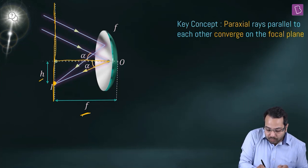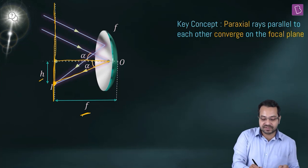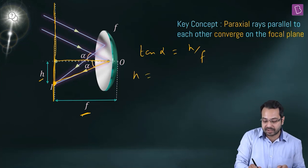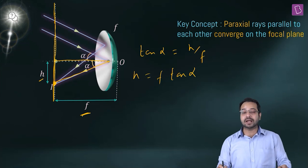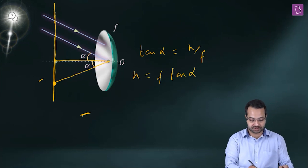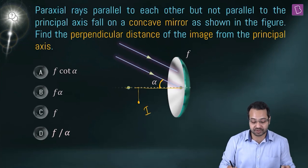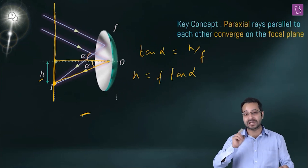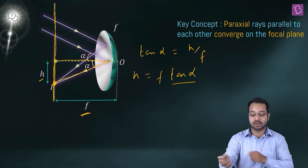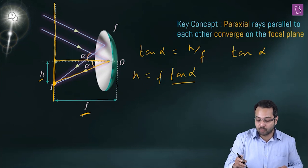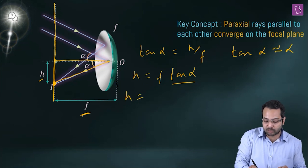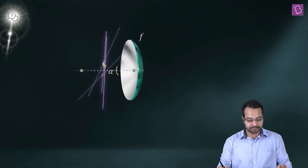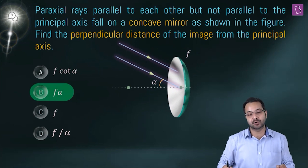Looking at the triangle, tan α = h / f, so h = f tan α. Since α is very small, tan α ≈ α, giving h = αf. Option B is correct.